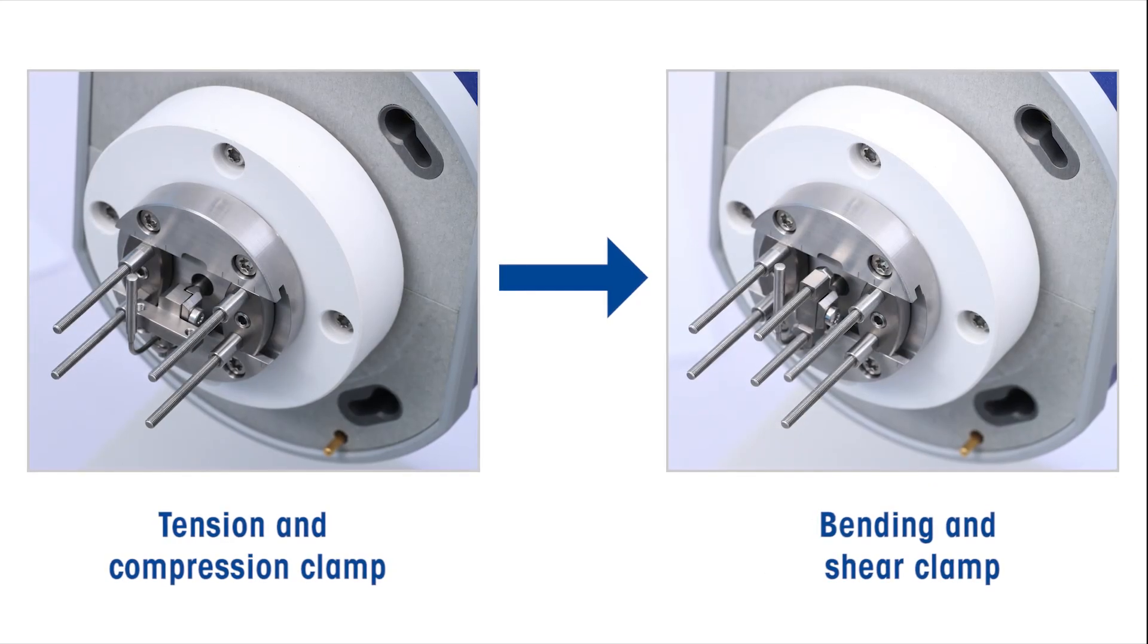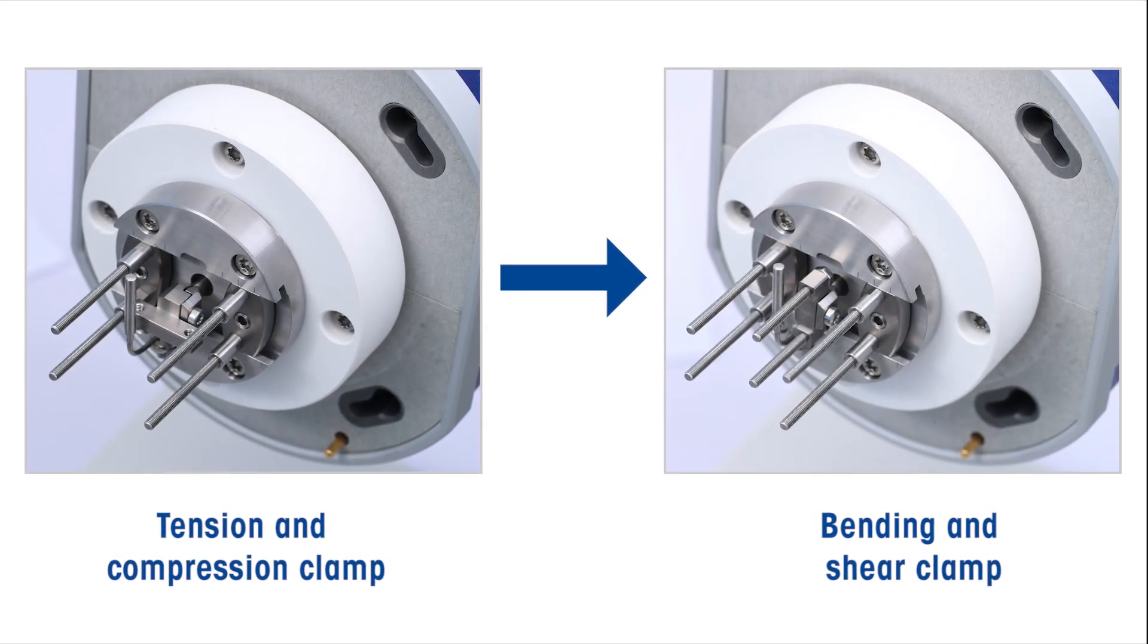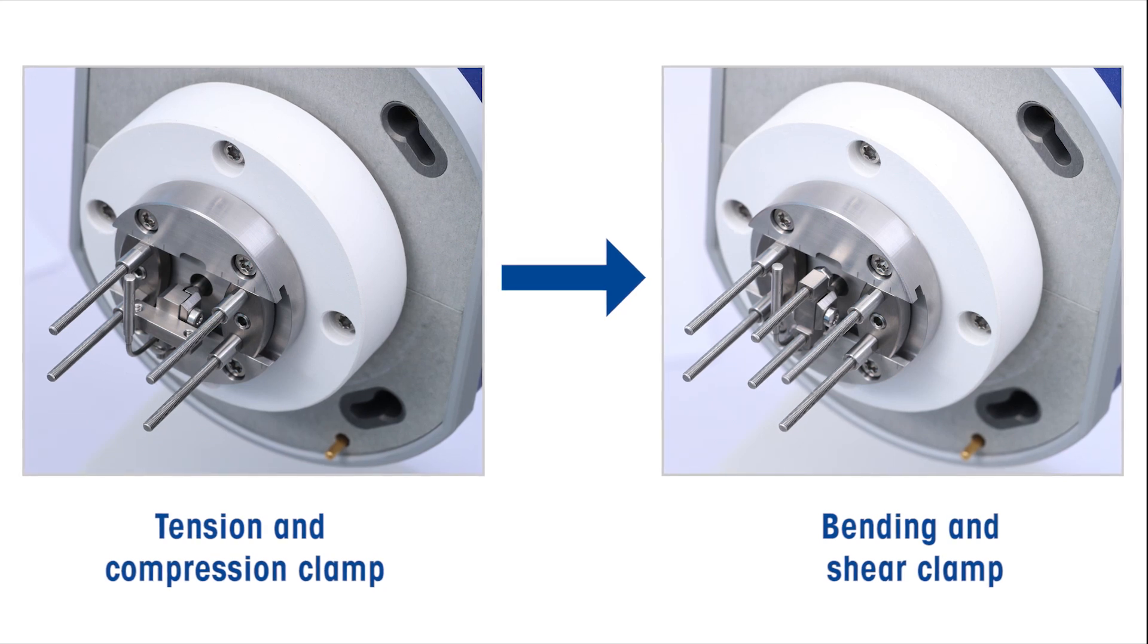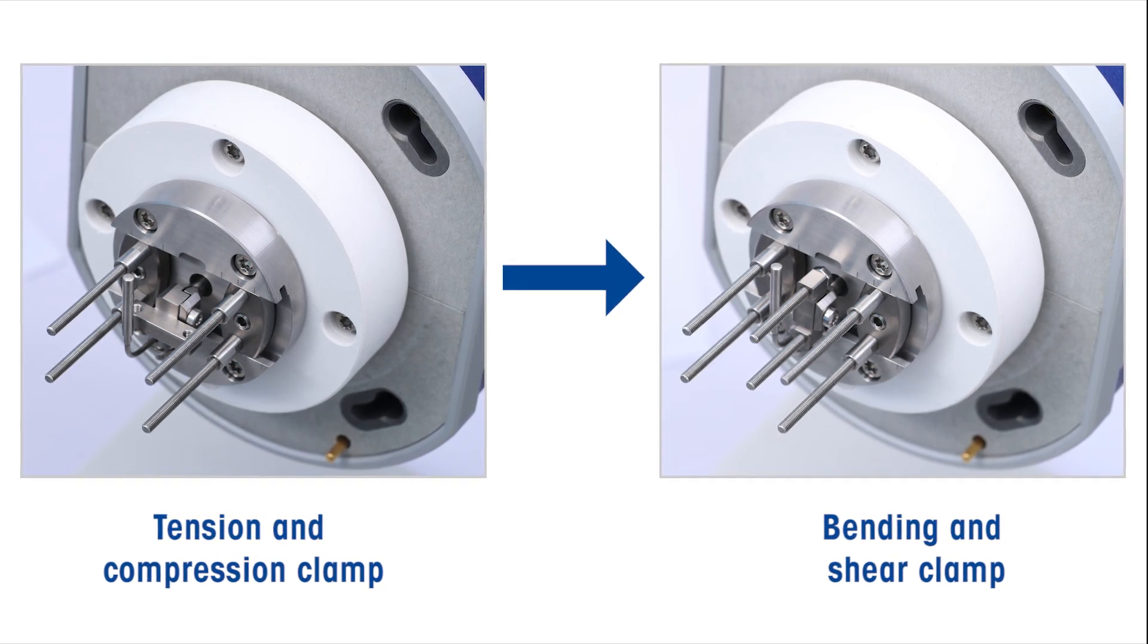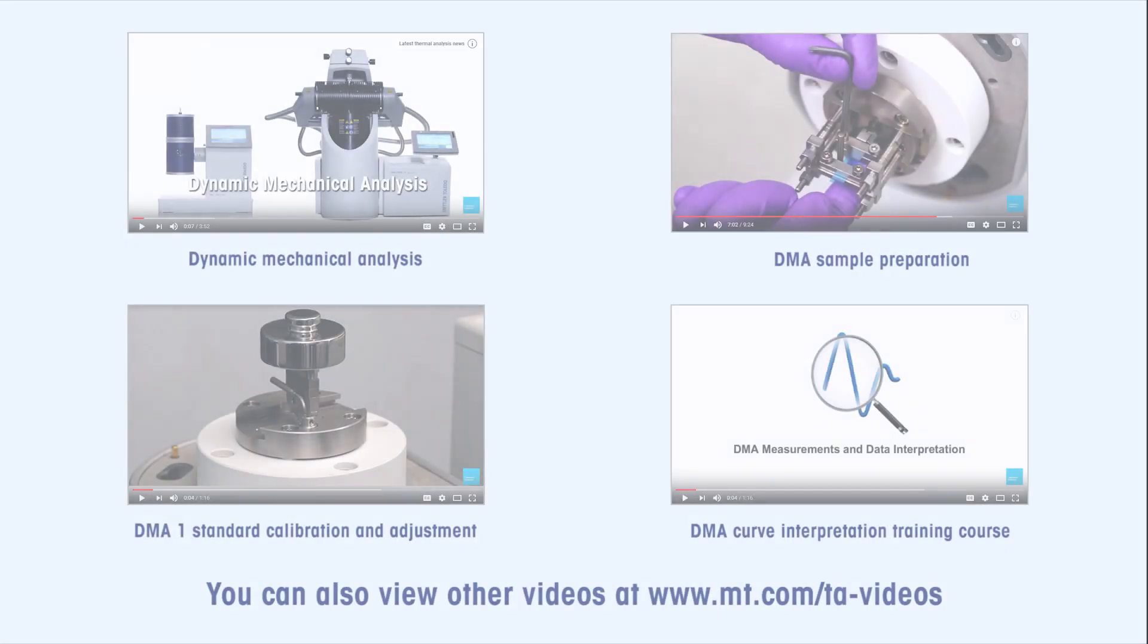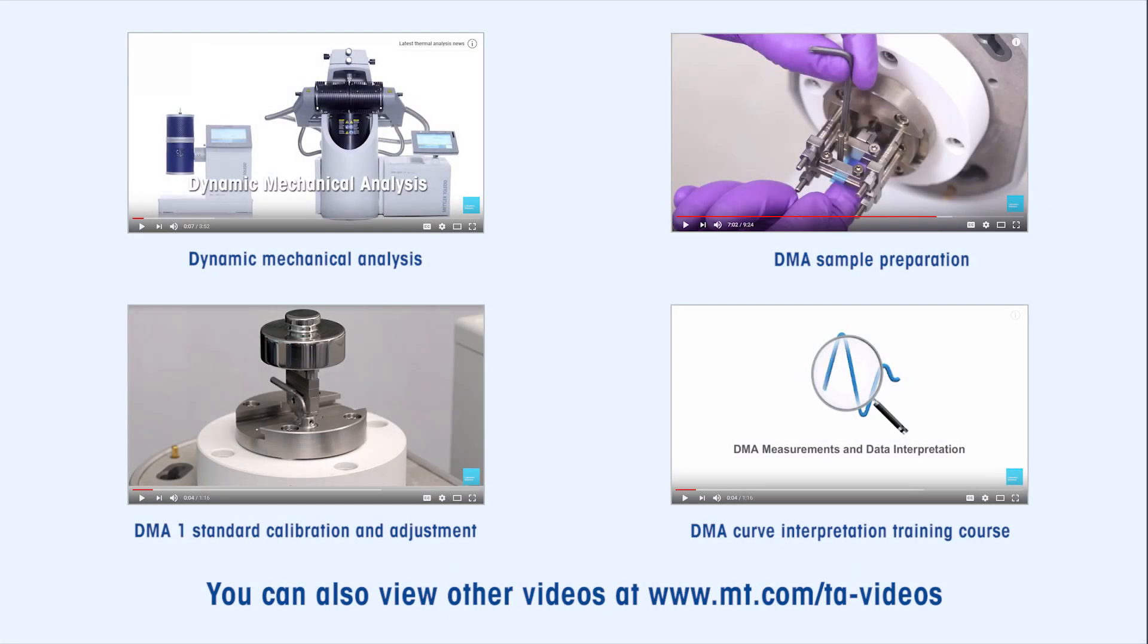By following the reverse process, you can also change a tension and compression drive shaft clamp to a bending and shear drive shaft clamp. For more information on DMA, please watch our how-to videos on YouTube.